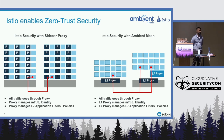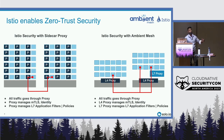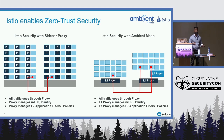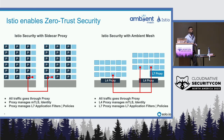This is where ambient mesh shines, because it provides an opportunity to simplify that operation altogether. While you still get the benefits and capabilities of a service mesh, the function of the sidecar shifts away from the actual application and moves towards two components — broken down into layer four and layer seven. Those two components are known as the Z-tunnel and the waypoint proxy.